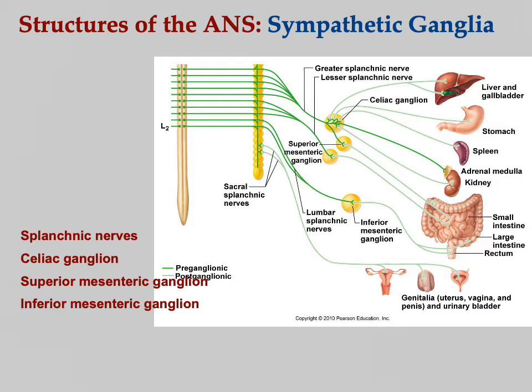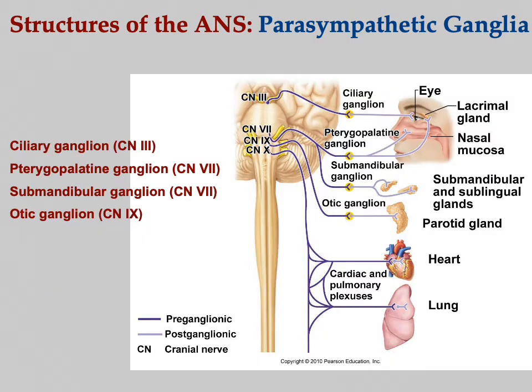The inferior mesenteric ganglion is at the bottom of the intestines. The four parasympathetic ganglia: the ciliary goes to the eye; the pterygopalatine — cranial nerve seven — goes to the nasal mucosa and the lacrimal gland; the submandibular — also cranial nerve seven, the facial nerve — is for salivation; and the otic ganglion, cranial nerve nine, glossopharyngeal, goes to the parotid gland near the ear.